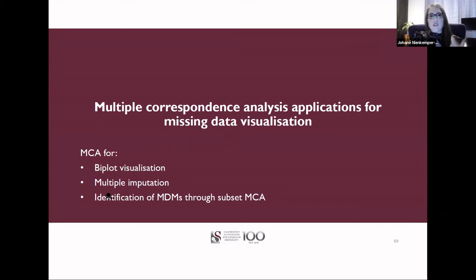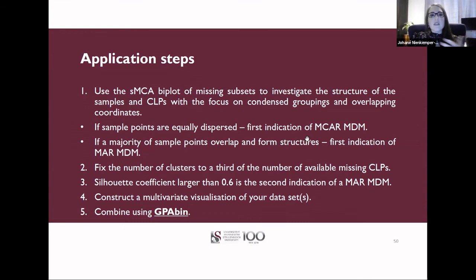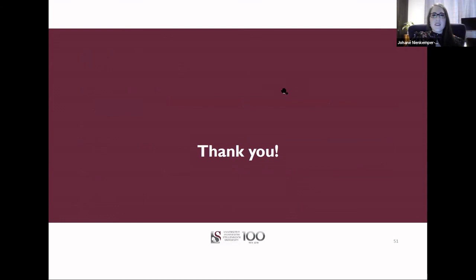To conclude: I showed MCA for bi-plot visualization, multiple imputation, and using subset MCA to identify the cause of missingness. The take-home message: use MCA bi-plots for missing subsets to understand non-response structure. Use a clustering technique on the bi-plot to decide whether values are possibly MAR or MCAR. Once you've decided on the mechanism, apply a suitable missing data technique, and if you've applied multiple imputation, use the GPA-BIN approach for unbiased combined visualization.